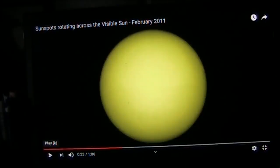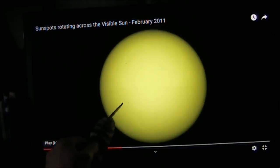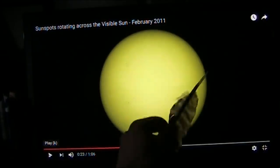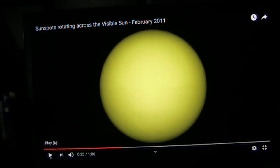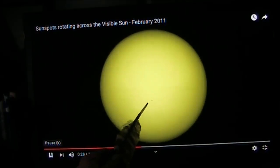Okay, this is sunspots rotating across the visible sun from February 2011 on YouTube. We are going to watch them start to come, and they're going to be very consistent as they move across. I think I fully understand why. You see them pop up here. There, there, they just keep moving right along.